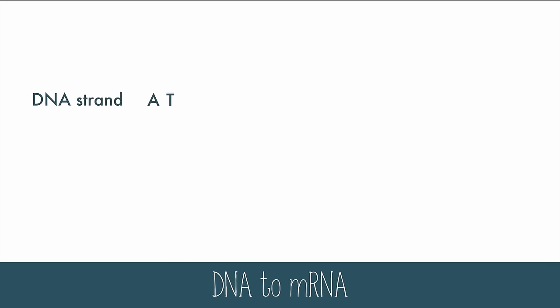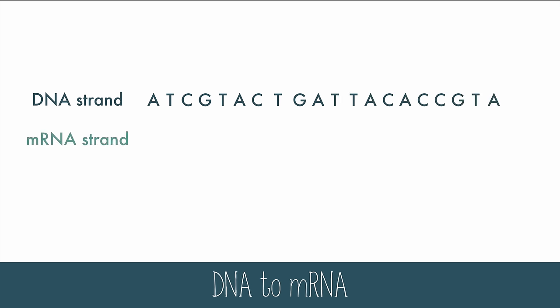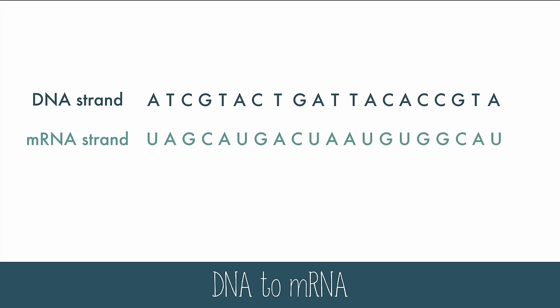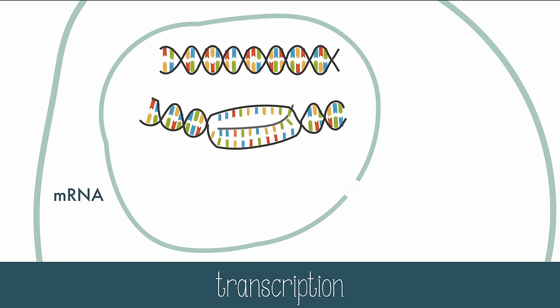If the DNA strand looked like this, the complementary mRNA strand would be the complement, but each time there would normally be a thymine, there's a uracil in its place. The mRNA also doesn't copy the entire strand of DNA — it only copies the portion that codes for the protein it wants at the time. In fact, most of DNA doesn't code for anything; only about 2% of it codes for protein. This small section of coding DNA has a start and stop signal.